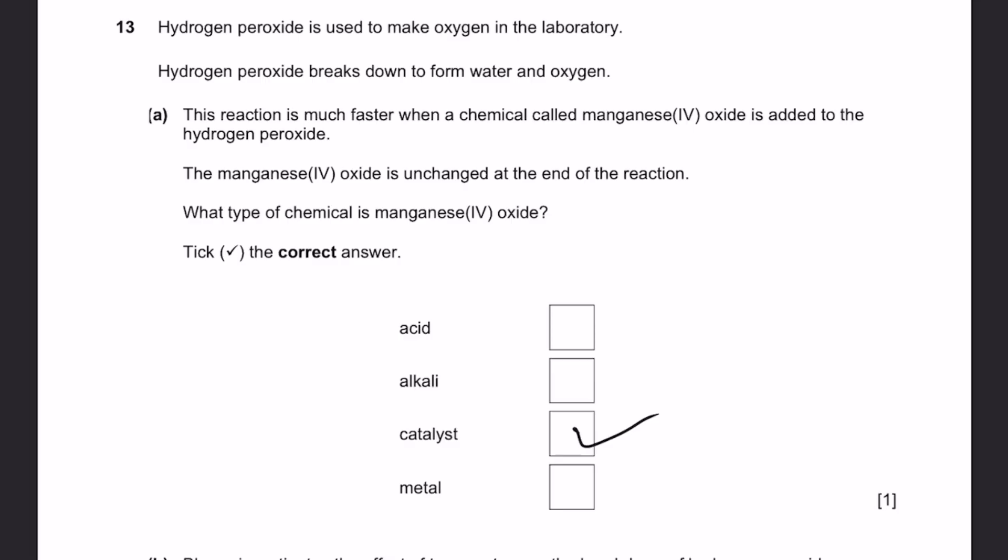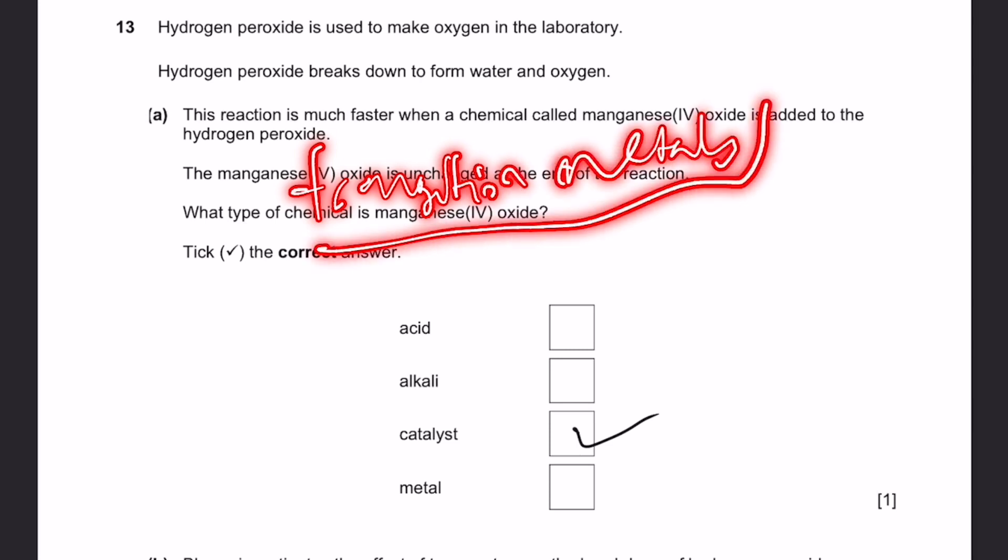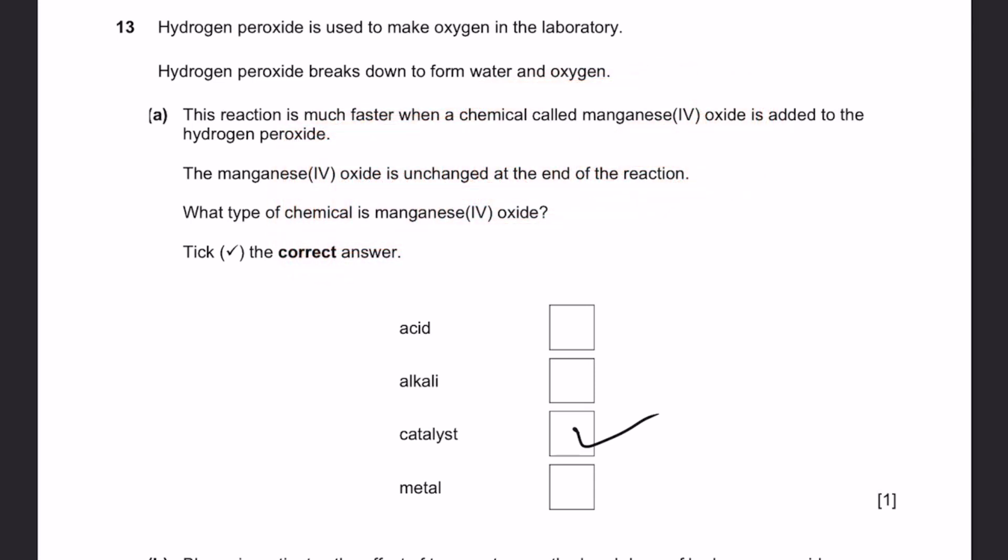Question 13. Hydrogen peroxide is used to make oxygen in the laboratory. It breaks down to form water and oxygen. Part A. This reaction is much faster when manganese oxide is added to hydrogen peroxide. The manganese oxide is unchanged at the end of the reaction. What type of chemical is manganese oxide? It's a catalyst since it speeds up the reaction and is unchanged at the end.